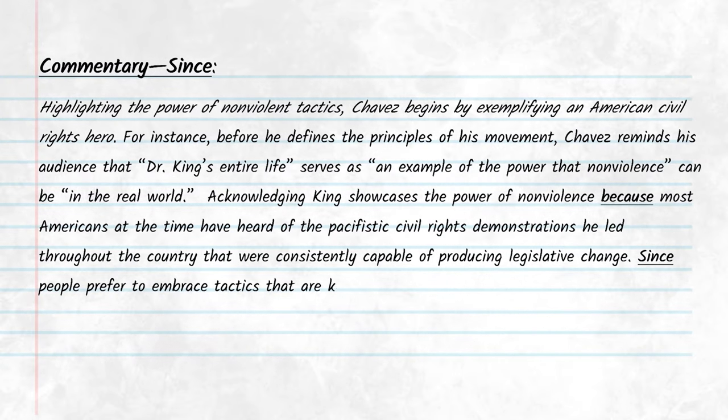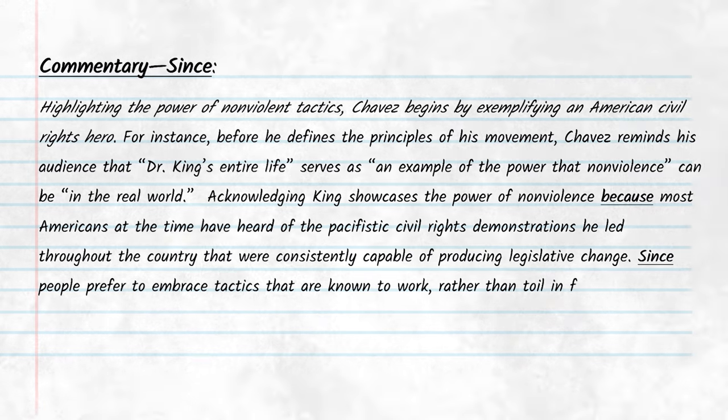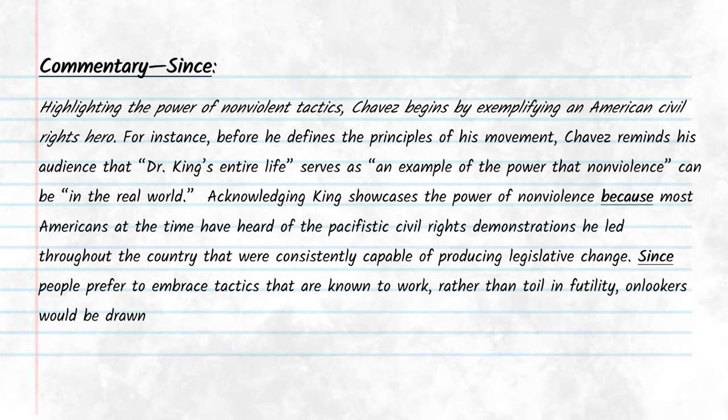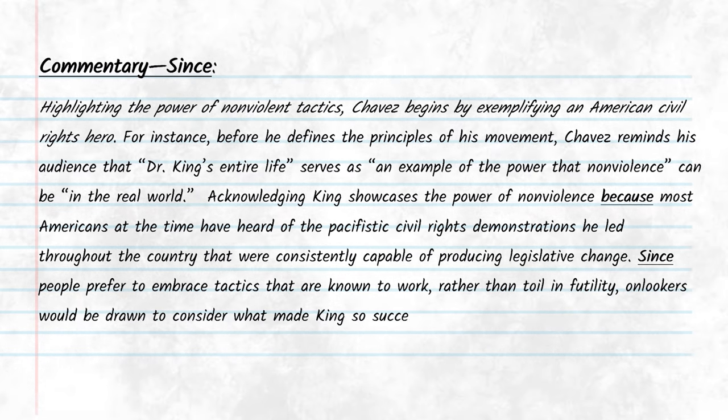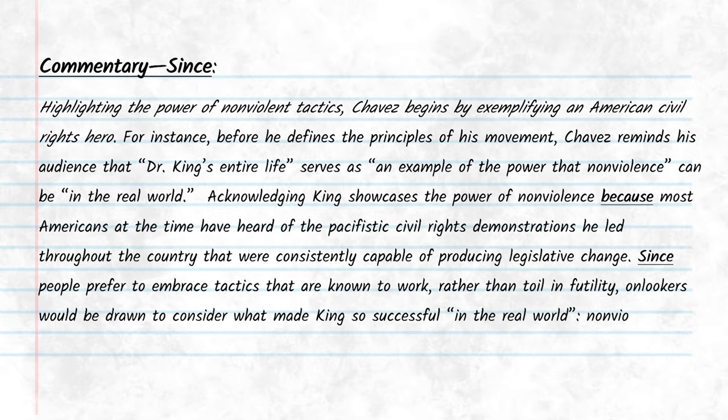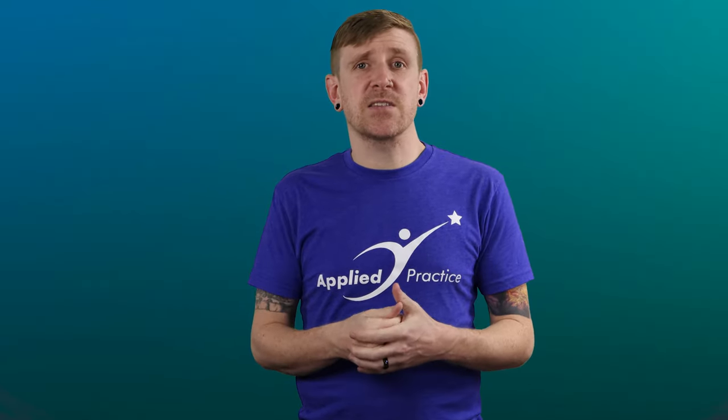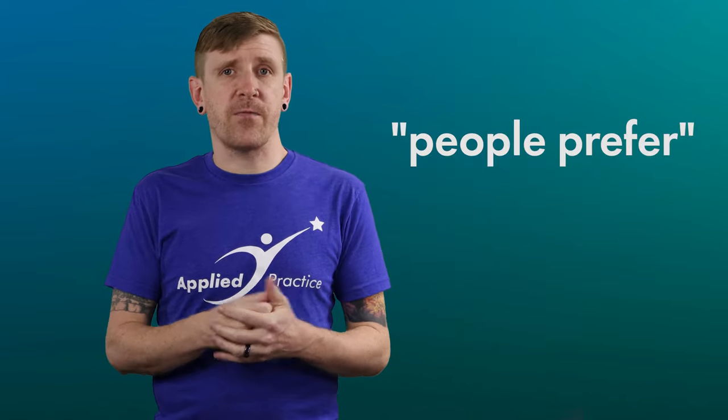I'm going to start my next sentence with the word 'since' and follow it with another assumption. My second sentence of commentary would read: 'Since people prefer to embrace tactics that are known to work rather than toil in futility, onlookers would be drawn to consider what made King so successful in the real world — nonviolence.' You can tell I'm communicating my inferential assumptions because I say things like 'most Americans would' and 'people prefer.' These are generalized statements. Notice how I also refer to the real-world success tied to nonviolence.